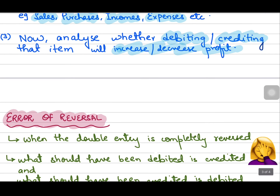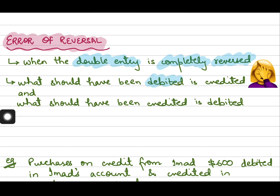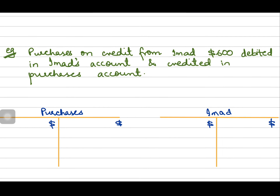Now let's move to our next error, which is error of reversal. Error of reversal occurs when the double entry is completely reversed. This happens when the account that should have been debited is credited, and vice versa — the account that should have been credited is debited. That is why it is called error of reversal: the double entries are completely reversed.